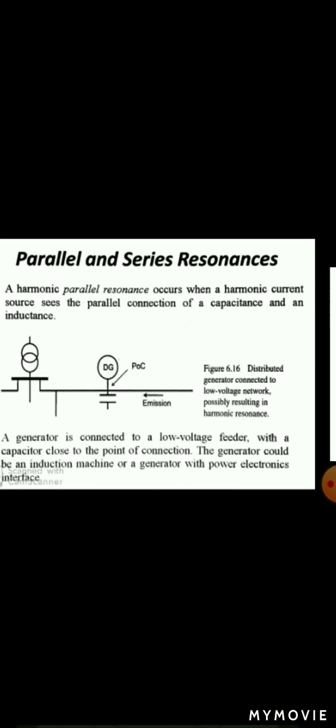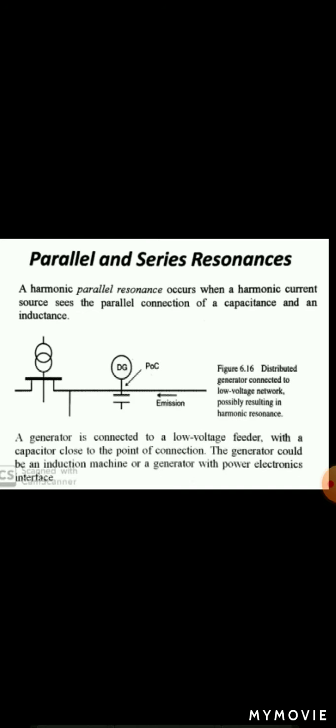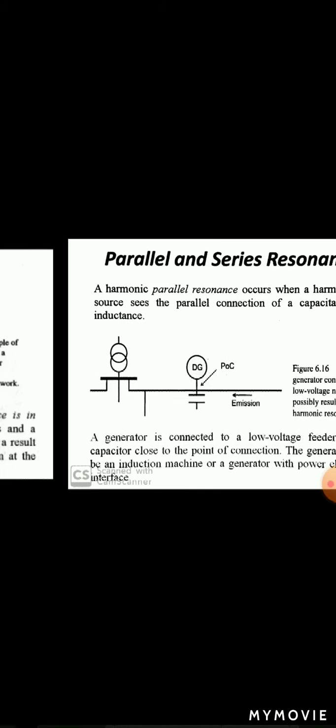Parallel and series resonance. A harmonic parallel resonance occurs when a harmonic current source sees the parallel connection of capacitance and an inductance. By the figure, we can see that a generator is connected to a low-voltage feeder with a capacitor close to the point of connection. The generator could be an induction machine or a generator with power-electronic interface.